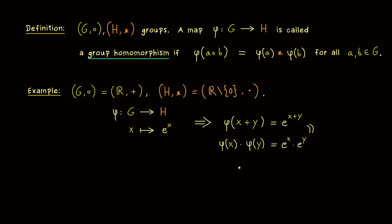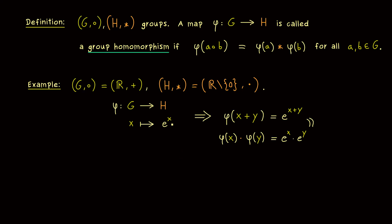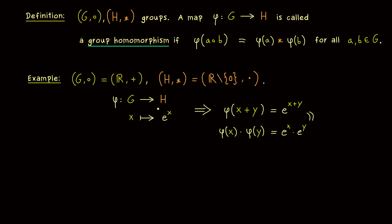Moreover, here you see something crucial as well: a group homomorphism does not have to be surjective at all — you don't have to hit all the group elements on the right hand side. However, as we have already discussed, if we hit an element in H we also have to hit the inverse. So if we don't have surjectivity, we will still describe a whole group embedded in H. Indeed, this is something I want to discuss in more detail really soon.